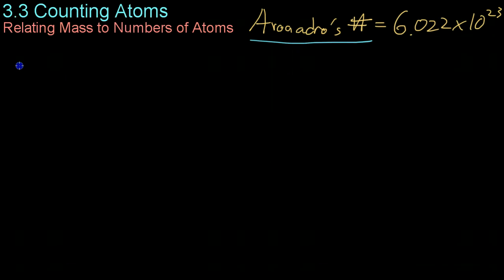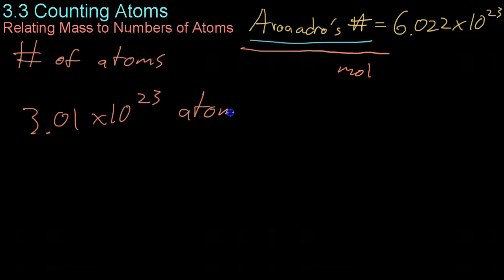Or if for some reason you're given the number of atoms, and you can't wrap your head around that, you may want to use Avogadro's number as a conversion factor to get that in moles, which is a somewhat more tangible unit. So let's say you were given 3.01 times 10 to the 23rd atoms of silver. You could then use Avogadro's number, which is 6.022 times 10 to the 23rd atoms for each mole.